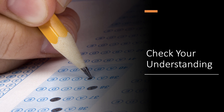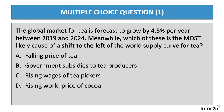Let's round off this revision video by giving you a chance to check your understanding. Here are four past multiple choice questions, all related to the theory of supply. Press the pause button and have a go. Question one: the global market for tea is forecast to grow by 4.5% per year between 2019 and 2024. Which of these is the most likely cause of a shift to the left of the world supply curve for tea?